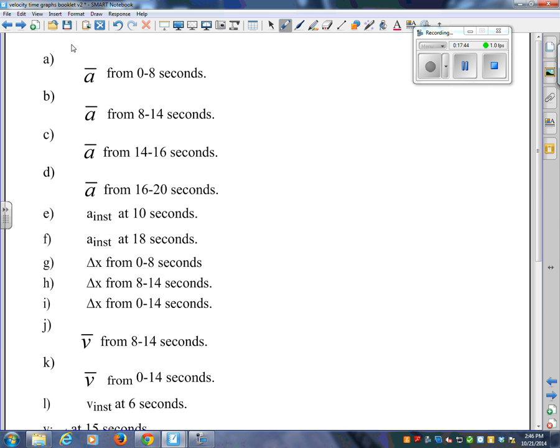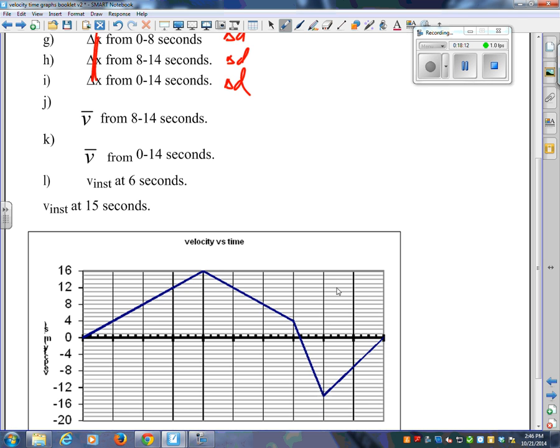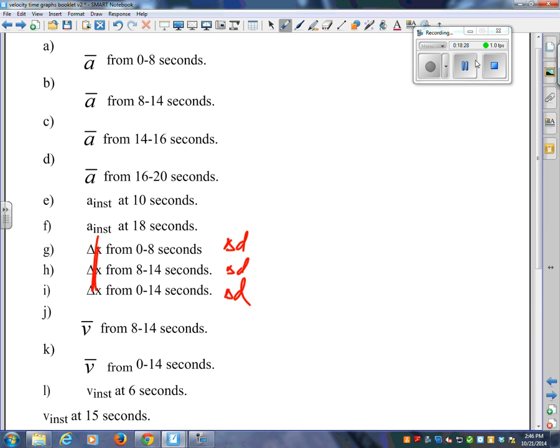What's A with the line? Is that the average acceleration? Yes. Let's just look at the very first one. So what does A bar mean? Average acceleration. A inst, instantaneous acceleration. Delta X should really be delta D, displacement. What does V bar mean? Average velocity. V inst, instantaneous velocity. How about you guys spend about maybe 12 minutes or so, maybe 15 minutes doing the first one and then maybe I may go through the answers with you. So I'll give you 15 minutes and then we'll reconvene. Okay, average acceleration.